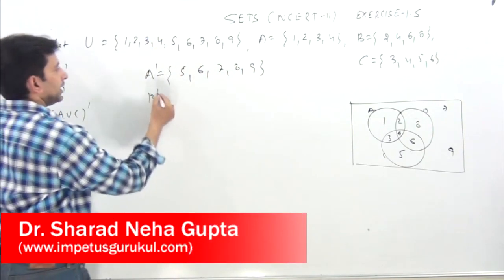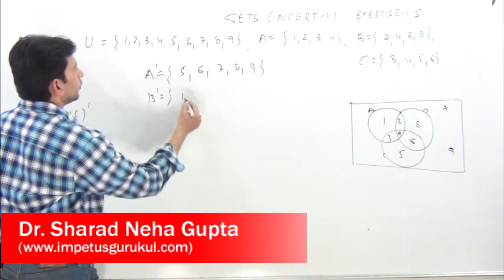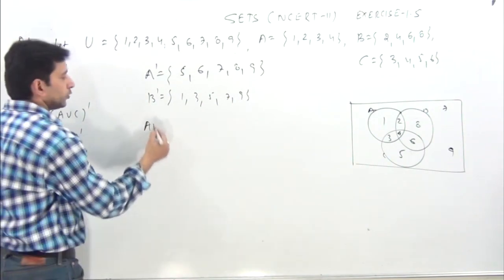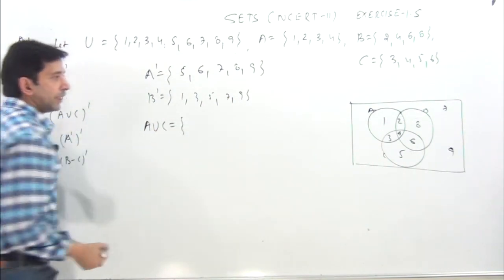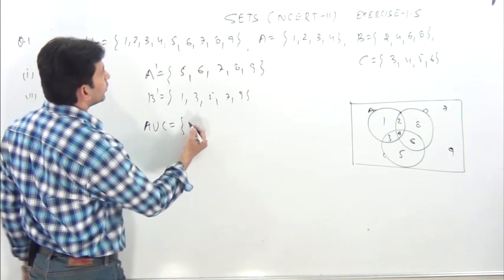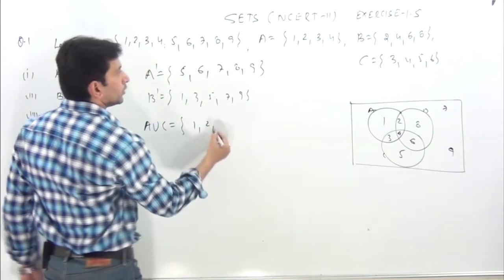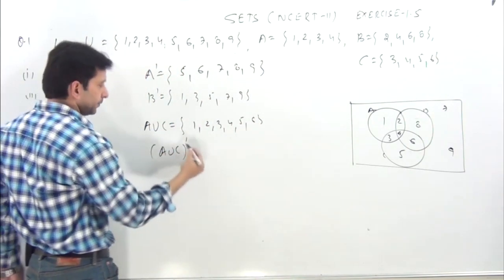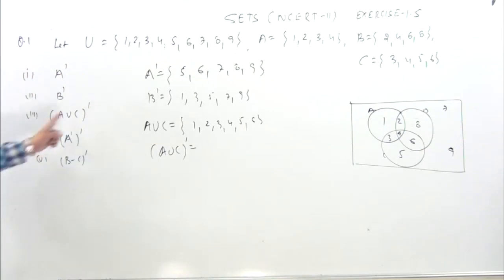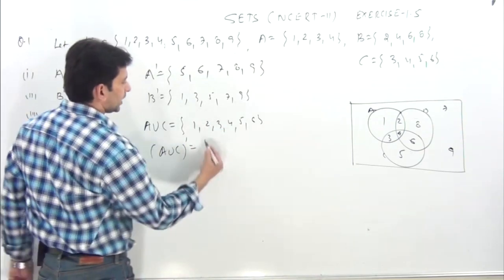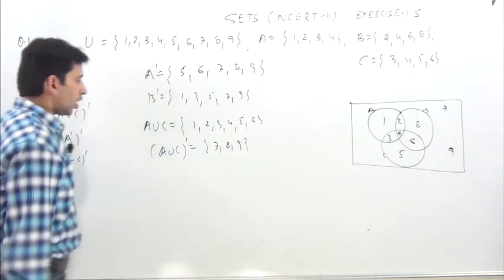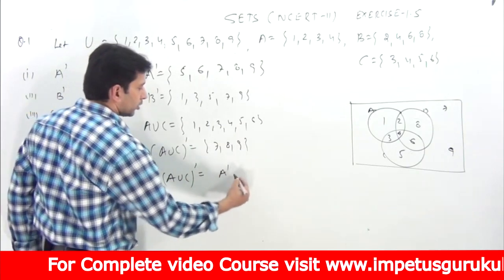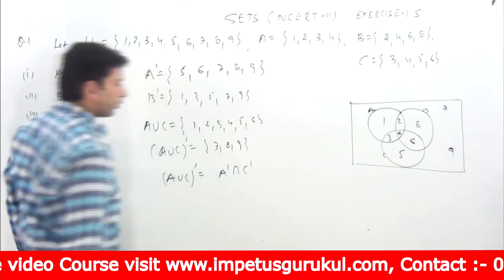B complement: jo elements B mein hain unko chhodke. B = {2, 4, 6, 8}, to B complement = {1, 3, 5, 7, 9}. A union C complement: pehle A union C nikalte hain. A union C = {1, 2, 3, 4, 5, 6}. Iska phir complement poocha hai: to {7, 8, 9}.